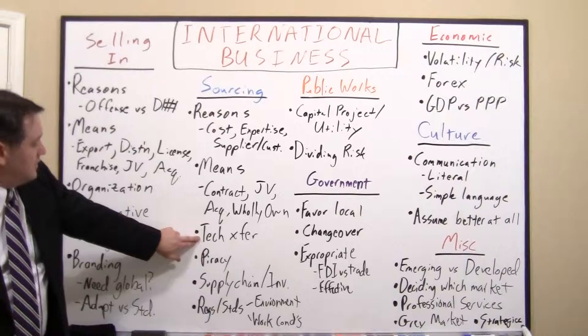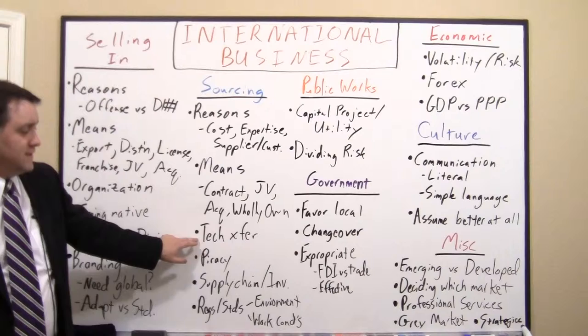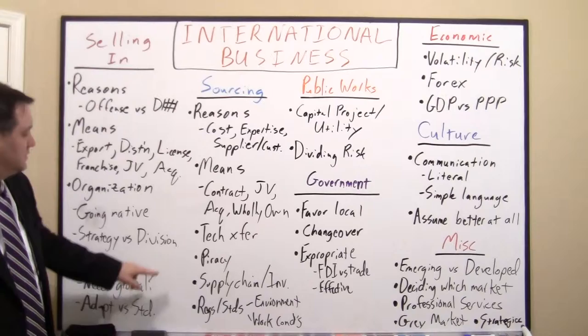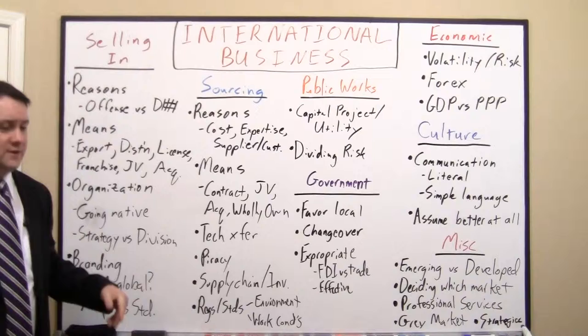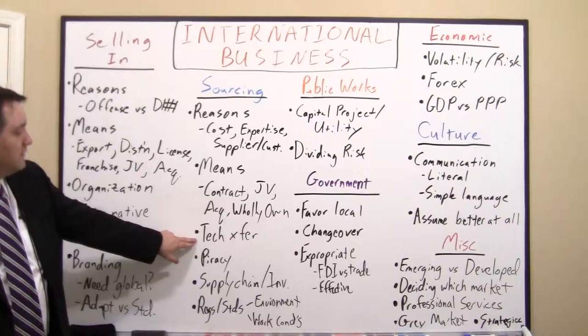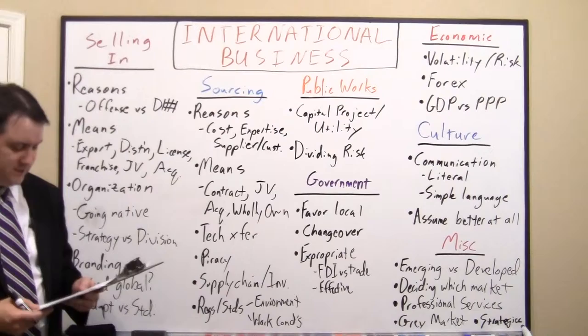The next two considerations are related. There's technology transfer, which is often times regulated by the government — they'll force you to have a joint venture because they want to educate their own workforce, moving up into engineering and design rather than just being manual labor. That's generally more in the government's interest than yours, because some of that may be proprietary and a competitive advantage. And then there's piracy. I always make the joke: technology transfer is basically legal piracy, and piracy is basically illegal technology transfer.